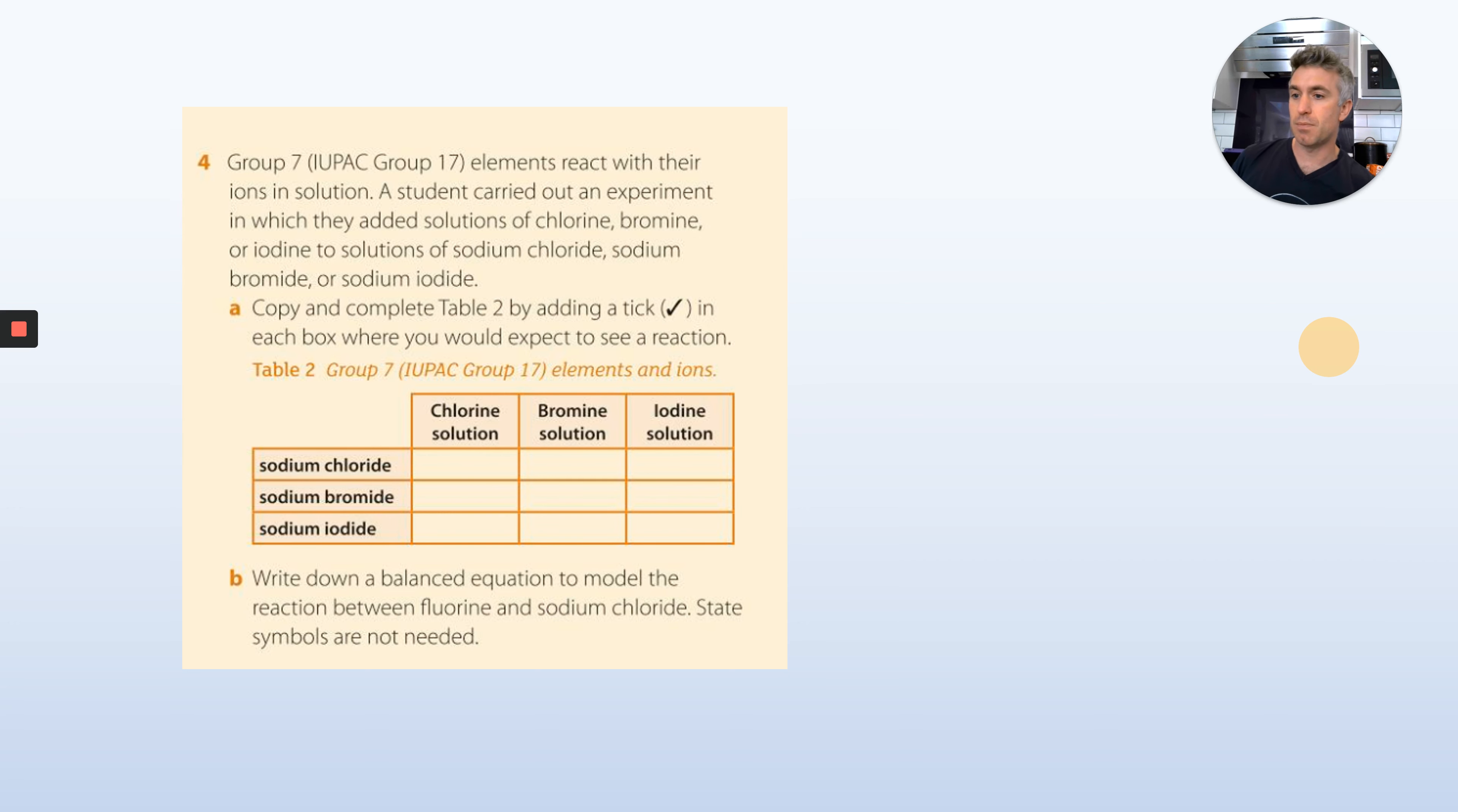Group 7 elements react with ions in solutions. A student carried out an experiment in which they added solutions of chlorine, bromine, or iodine to solutions of sodium chloride, sodium bromide, or sodium iodide. Copy and complete the table by adding a tick in each box where you would expect to see a reaction. You've done this in a previous lesson. So copy that table down, it's not too much, and then put a tick where there is a reaction. Notice, I'll give you a little hint, sodium chloride and chlorine, sodium bromide and bromine, sodium iodide and iodine, there's no reaction because they're the same. But you can use that to help you remember where there is a reaction and when there isn't.